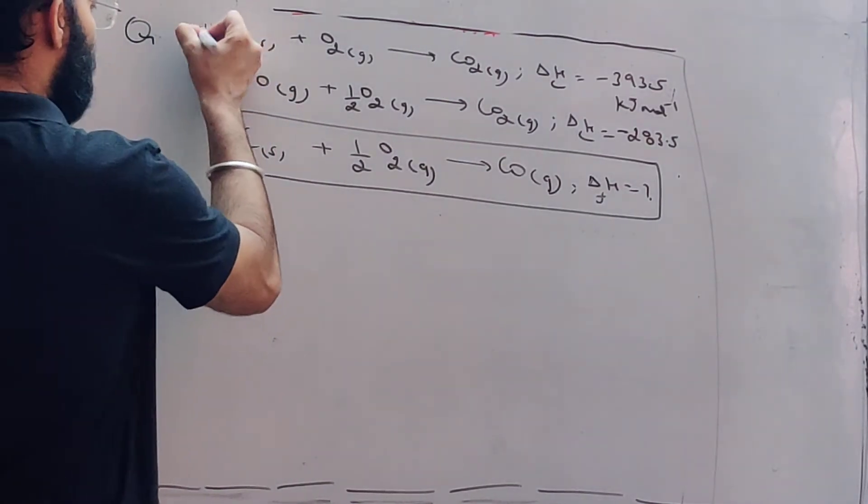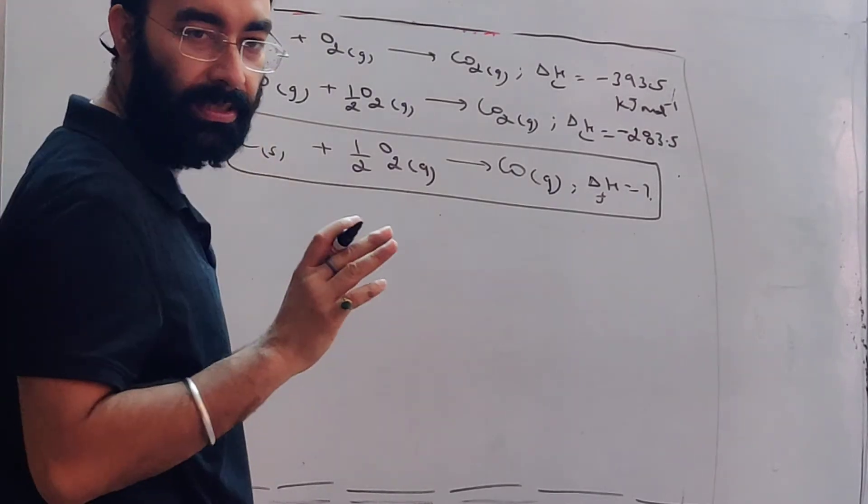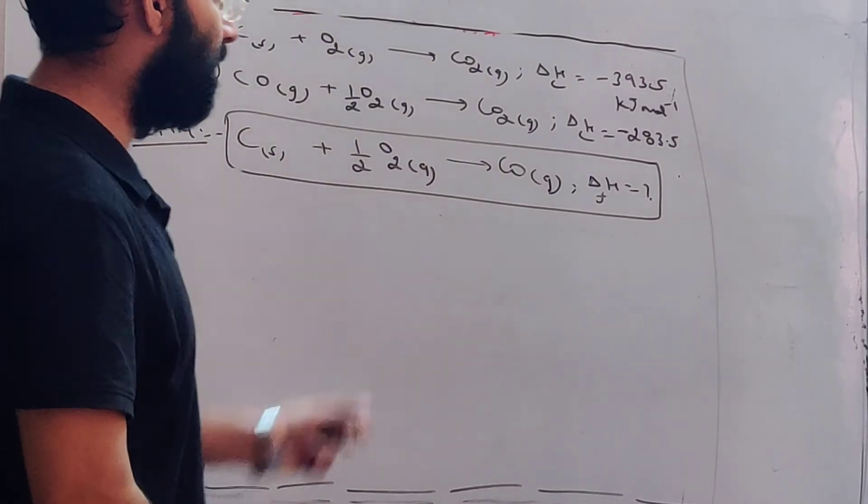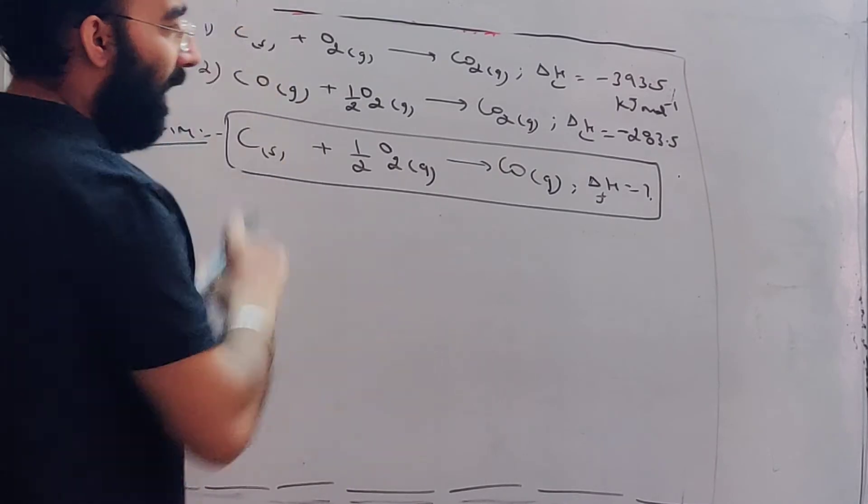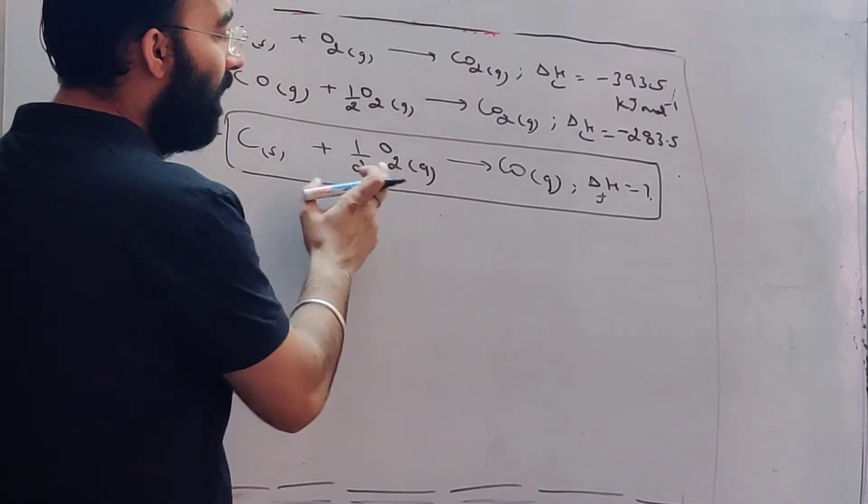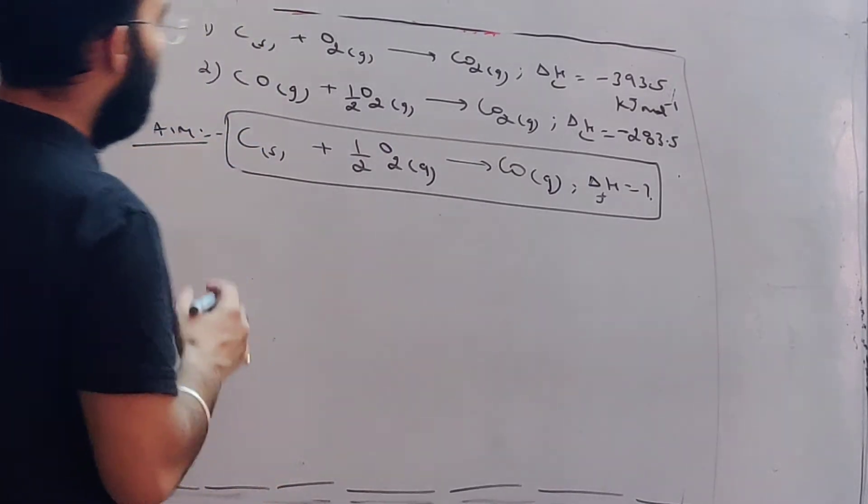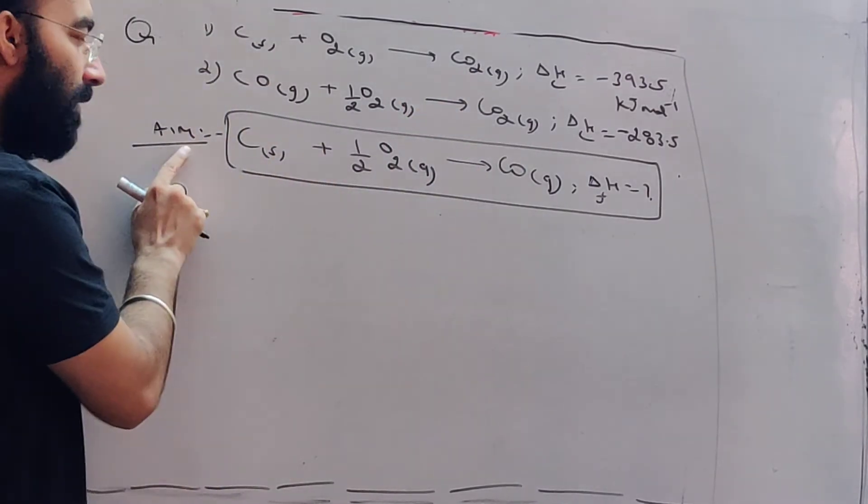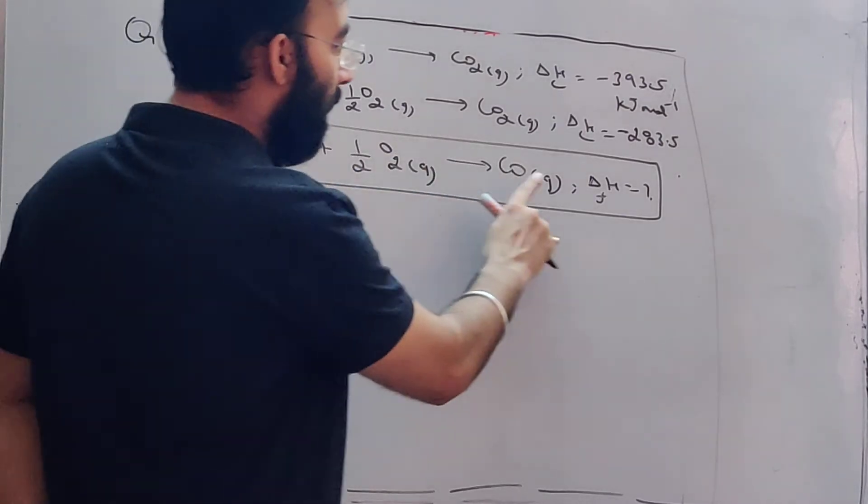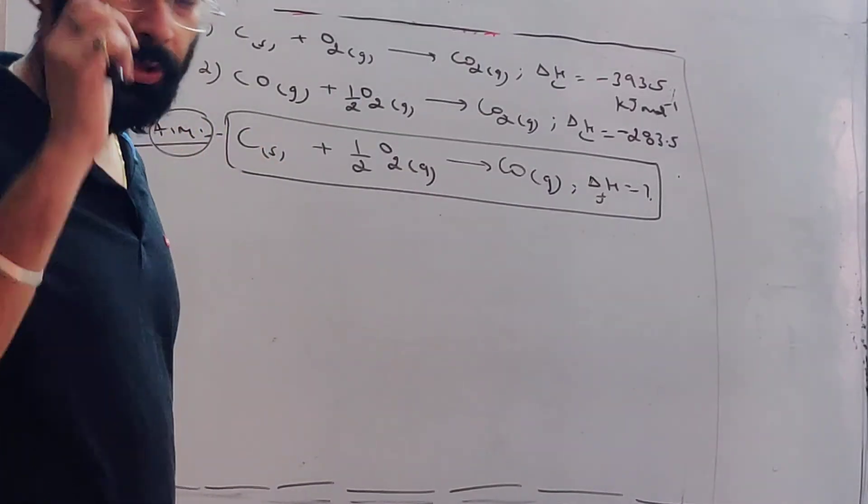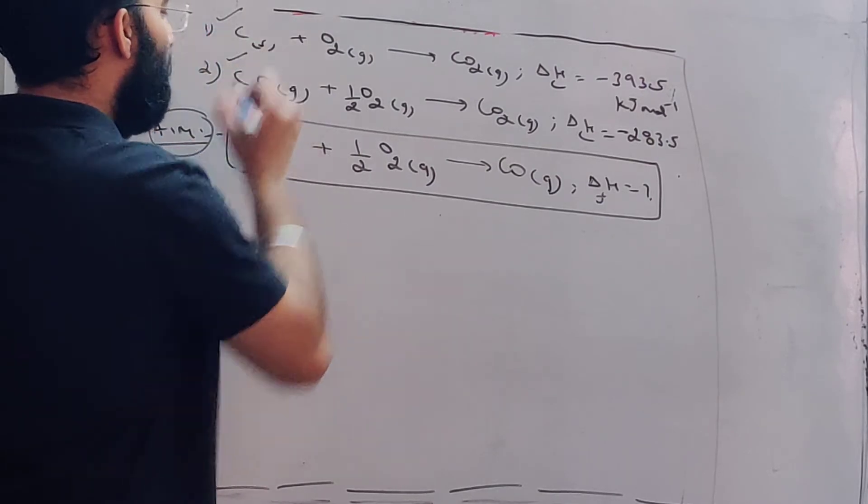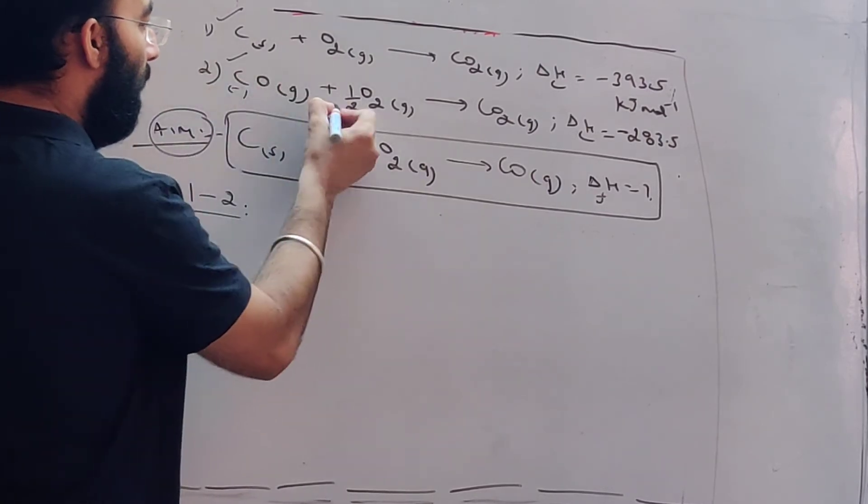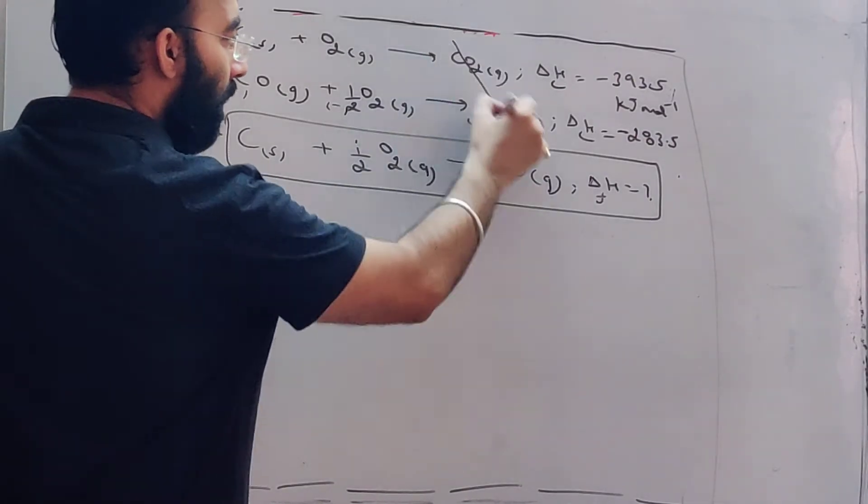Here, the question has given us equations one and two. These two equations are given to us. If we manipulate these two equations, we can reach the target equation. Now pay attention carefully. In the first and second equations that I have, both equations have carbon dioxide. But the equation we need, the aim equation, has no carbon dioxide at all. So what I'll do is subtract equations one and two.